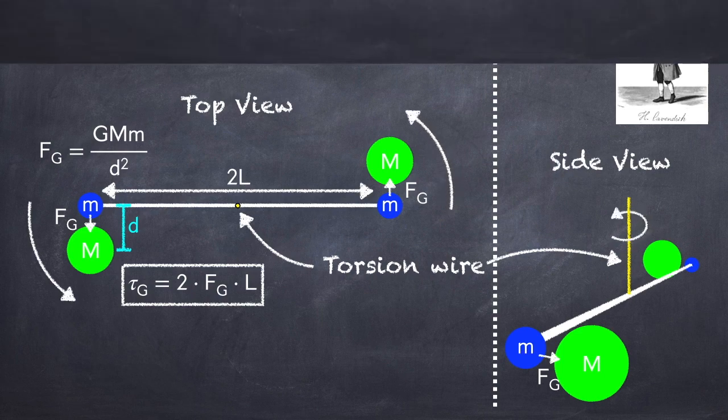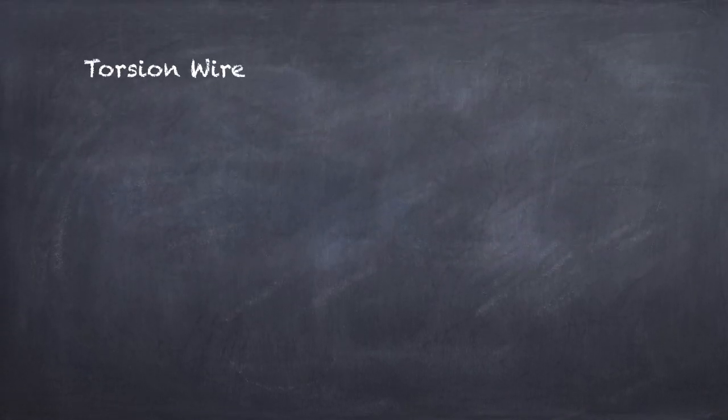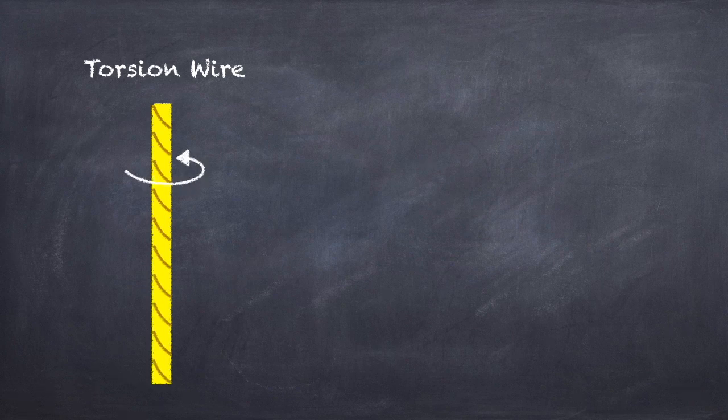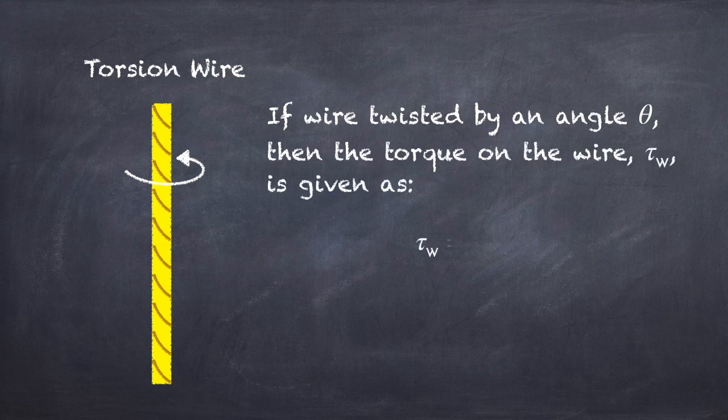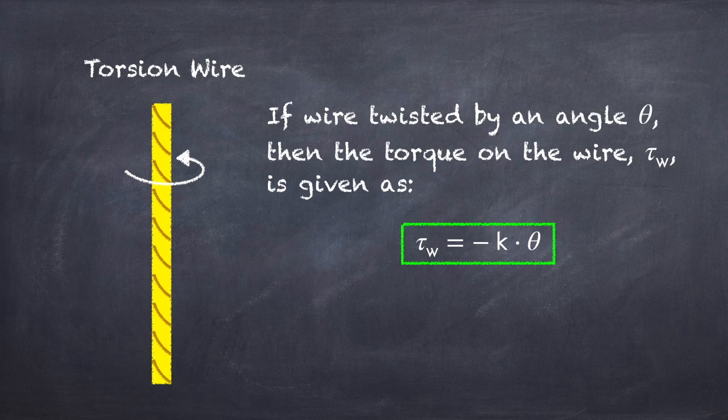So now let's explain what a torsion wire is. Well, it's basically just a wire, but it's got some stiffness to it, so it resists being twisted. And specifically, it resists in the following way. If you twist the wire by some angle, which I'm going to call theta, then the torque in the wire trying to undo the twisting is equal to some constant, which I'm going to call k, times the angle theta. And it's got a negative in front to indicate that it's trying to twist back. This constant k is determined by properties of the wire, and it can easily be figured out by running some experiments with known torques on the wire.